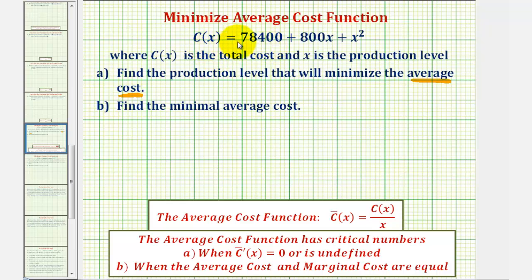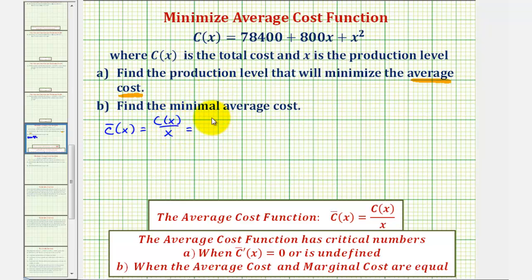For the first step we want to find the average cost function, where the average cost function is equal to the total cost function divided by x, where C of x represents the total cost and x represents the production level. So the average cost function is equal to C of x divided by x, or in our case, 78,400 plus 800x plus x squared, divided by x.